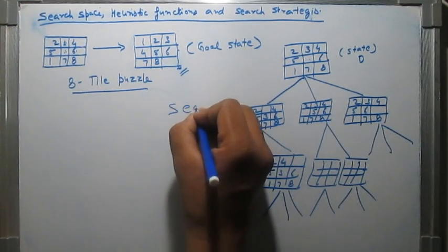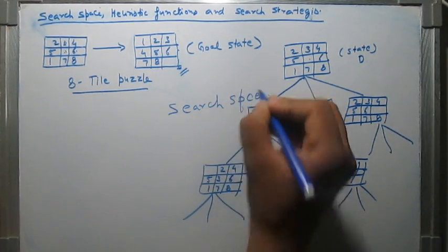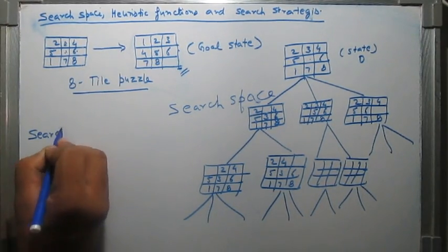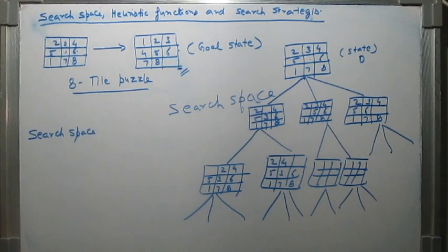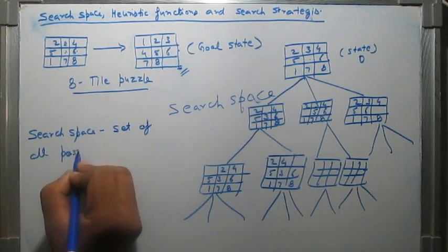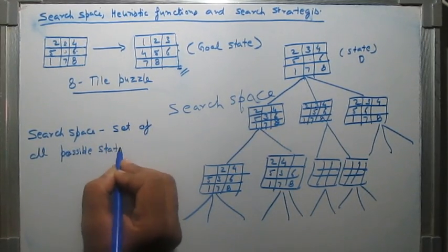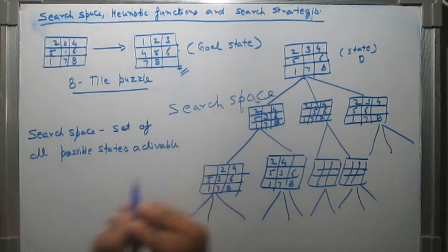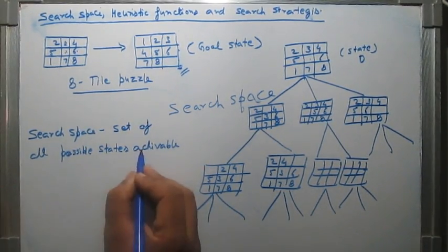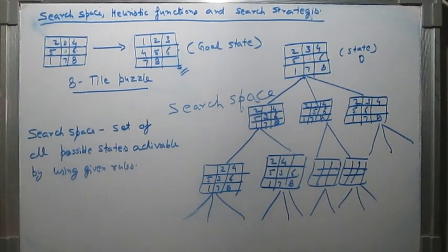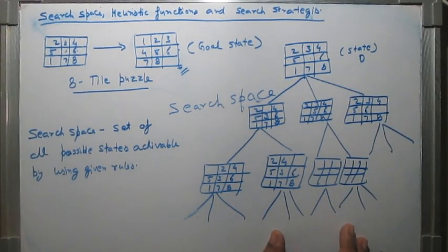This complete tree is called search space. We can define a search space as a set of all possible states. Our problem is reduced to a search problem in which our goal state exists and we have to search our goal state starting from state 0 or the initial state.